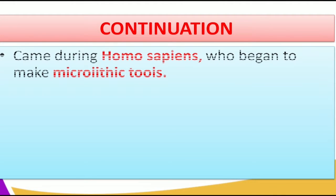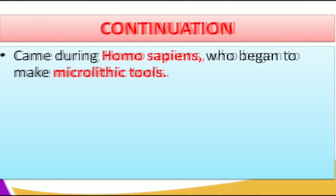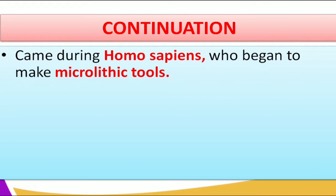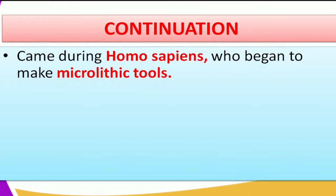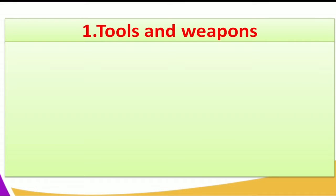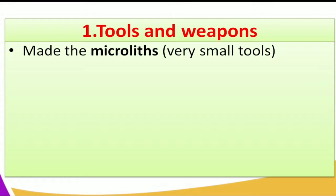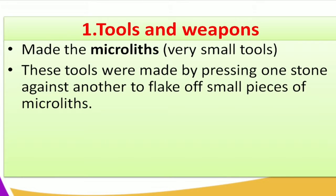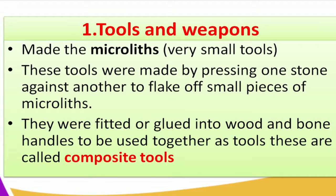Homo sapiens began to make tools known as microlith tools — very small tools. These were made by pressing one stone against another to flake off small pieces. They were fitted or glued into wood and bone handles to be used together, and these tools fitted with wood were known as composite tools.